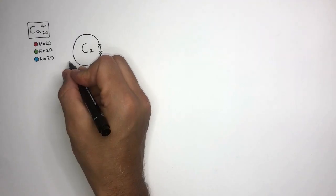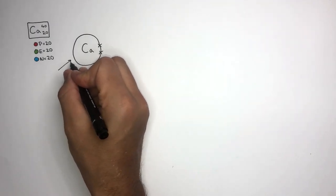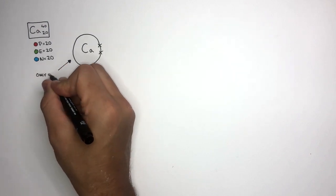Calcium has two electrons in this outer shell, and I'm going to draw its electronic configuration by only drawing the outer shell electrons.